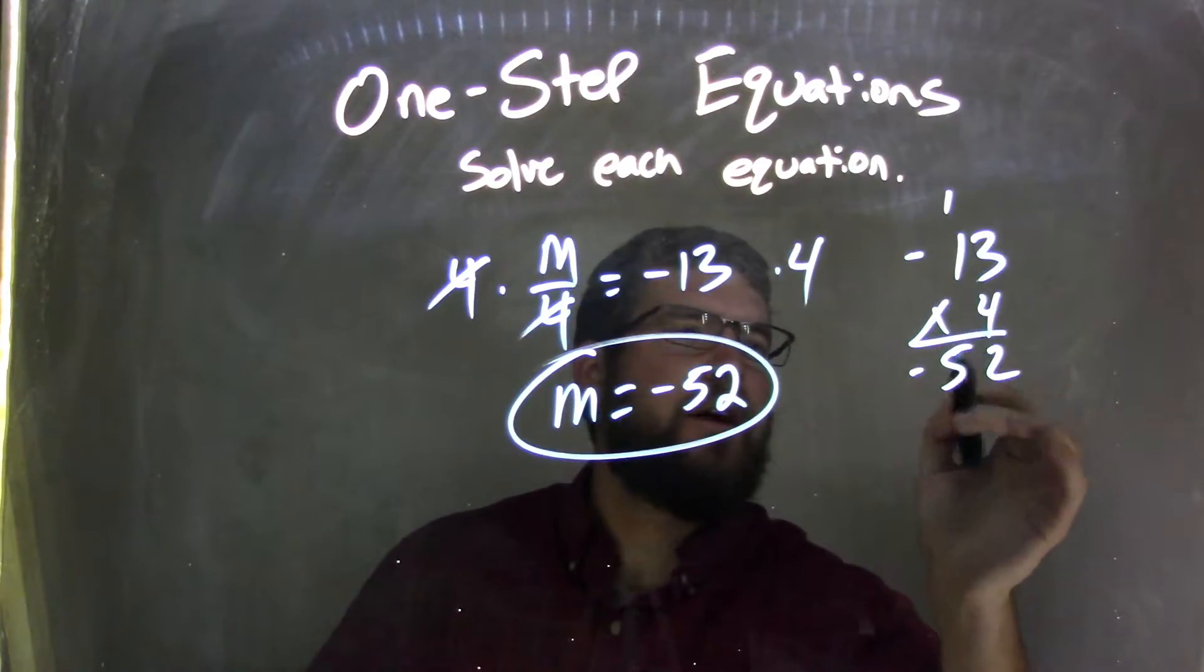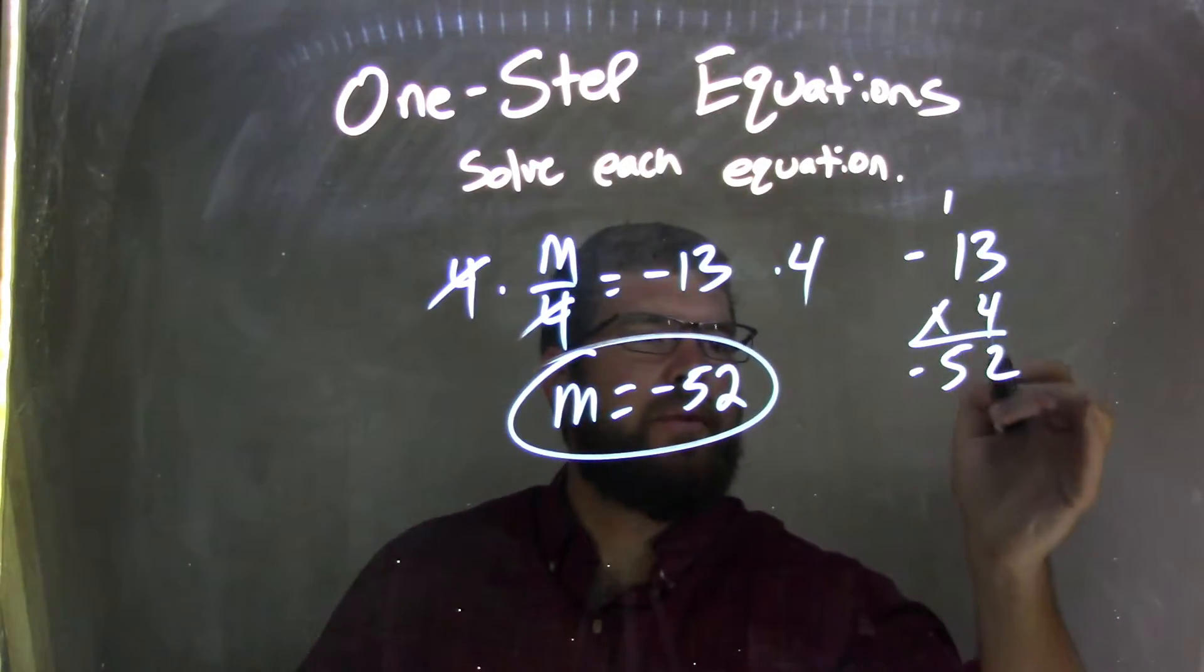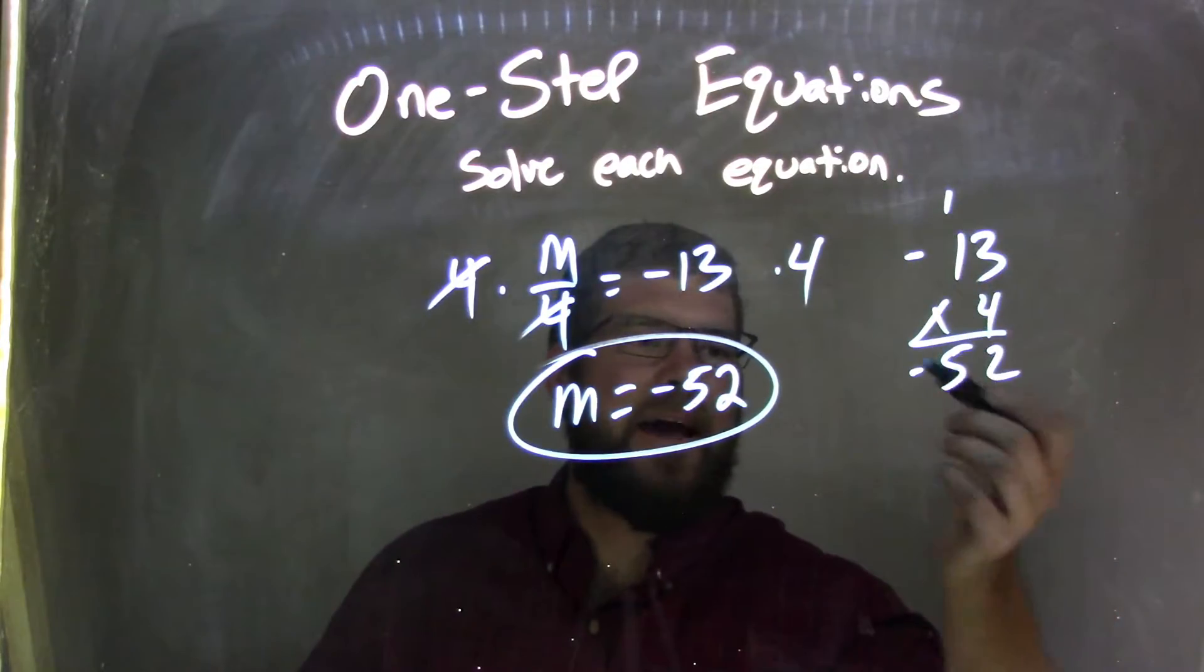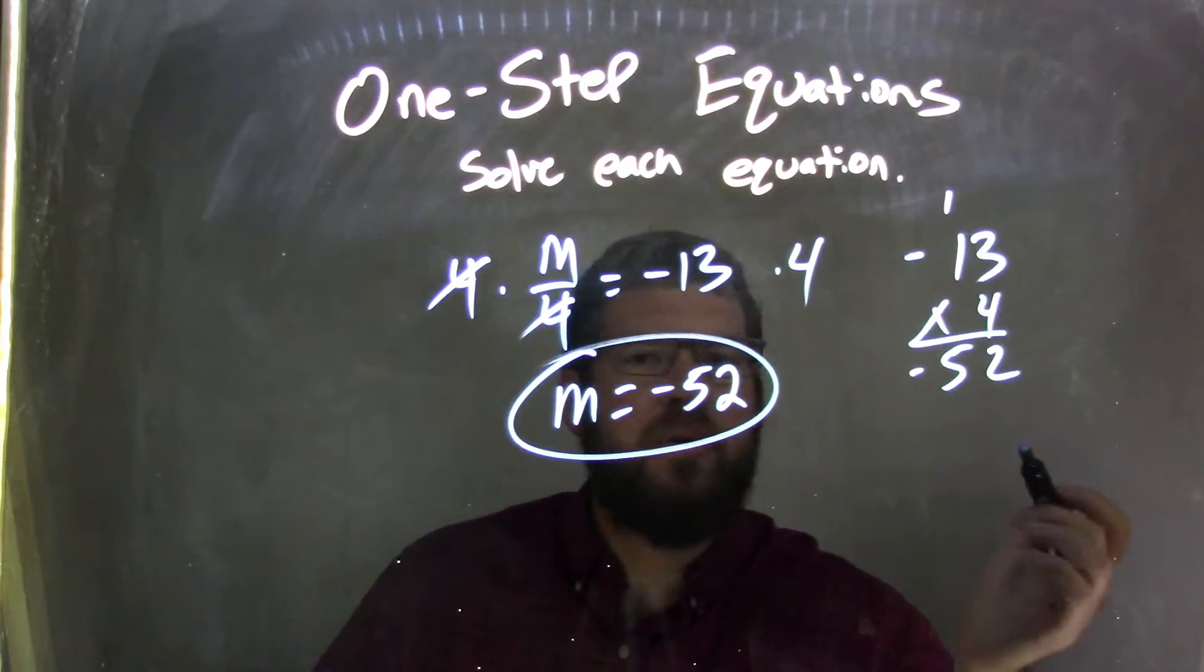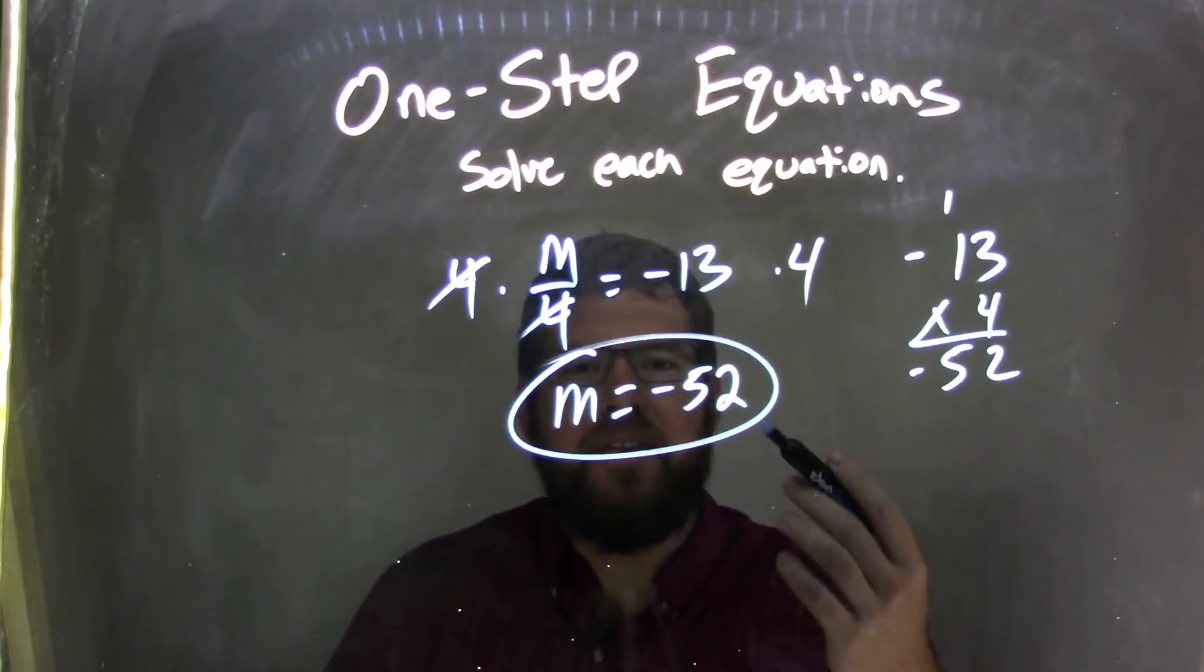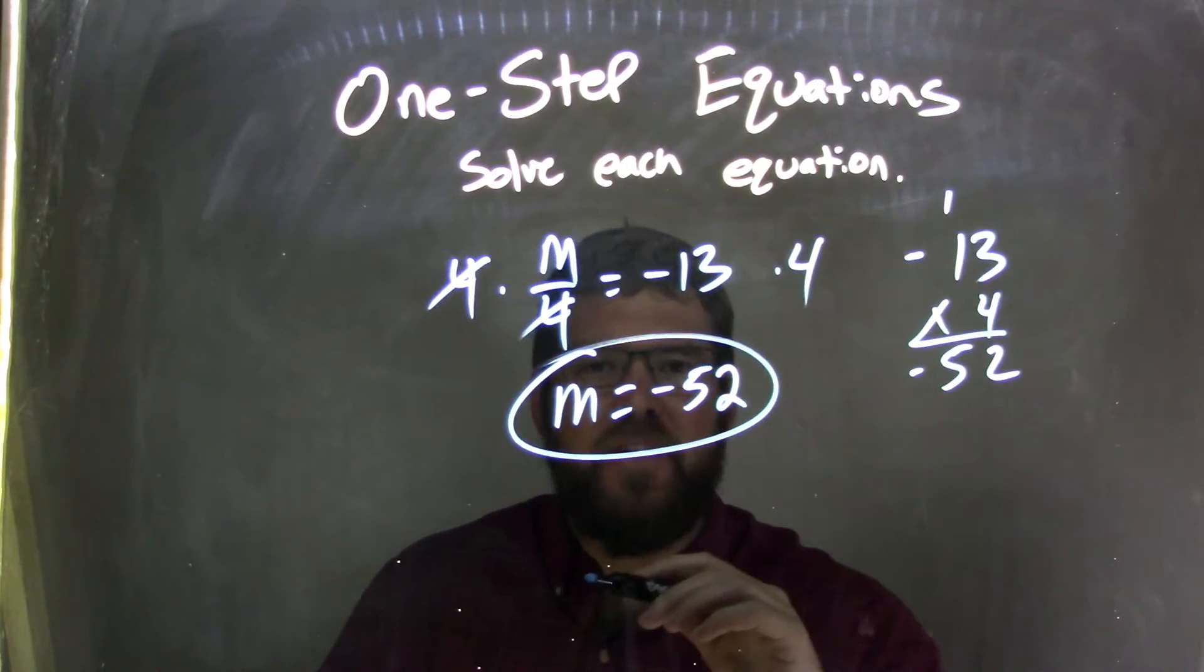So then negative 13 up top, 4 right here. Using the traditional method, 4 times 3 is 12, carry the 1. 4 times 1 is 4, plus 1 is 5. We're now negative, so we have negative 52. And so our final answer here is m equals negative 52.